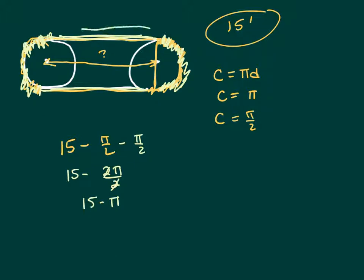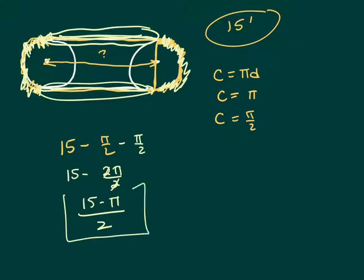15 minus π is this distance and this distance. So if I take 15 minus π and divide it by 2, that will be one of these distances. And that's the distance between the middle of those circles.